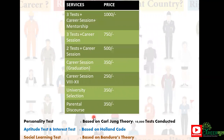These tests are based on three aspects. The personality test will be based on Carl Jung theory, and we have 10,000 tests under that to actually know about your personality — how your personality is and how it is better suited for some career options. Then we have an aptitude test and interest test based on Holland code, and a social learning test based on Bandura's theory.